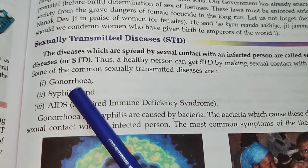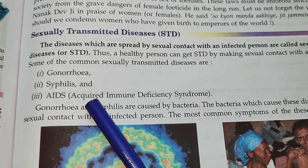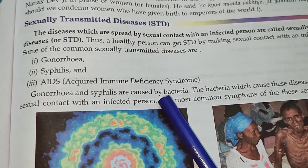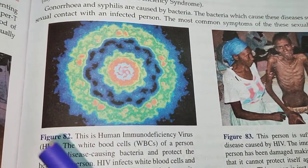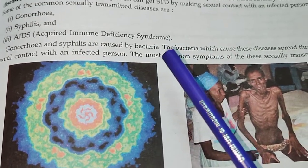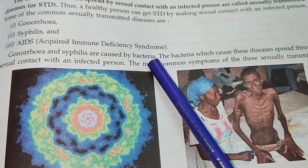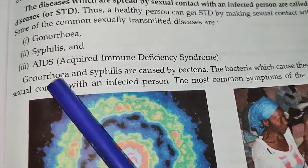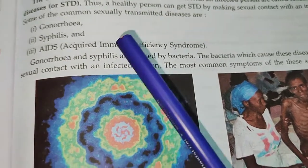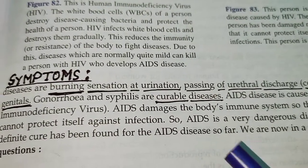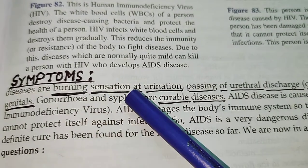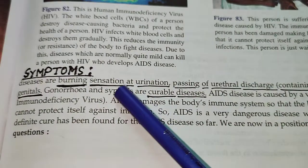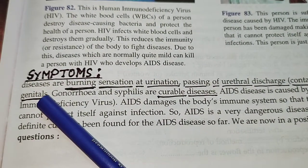The most common STDs in our country are gonorrhea, syphilis, and AIDS — that is, acquired immune deficiency syndrome. While gonorrhea and syphilis are caused by bacteria, AIDS is caused by the HIV virus. These bacteria spread through sexual contact with an infected person. The common symptoms include a burning sensation during urination, passing of urethral discharge with pus, and sores in the genitals.